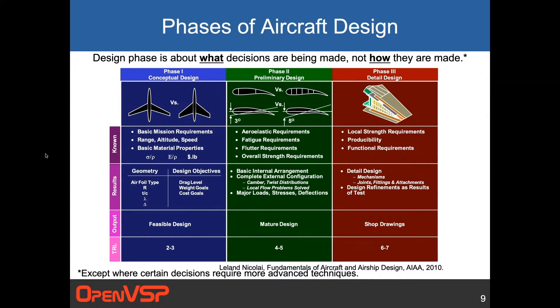In preliminary design, the parameters get a little bit more detailed. The requirements get more detailed. You're making more subtle choices: camber, twist distribution. You're looking at the major loads and stresses. You're zooming in a bit. Then finally in detail design, you're going all the way to what it takes to actually produce and make. You're looking at all the very detailed stresses and the final stage.